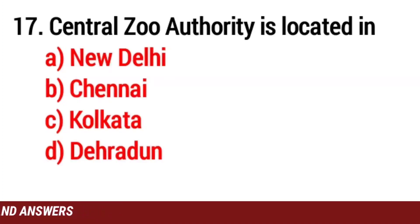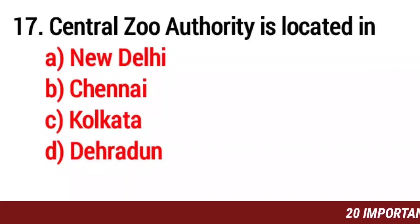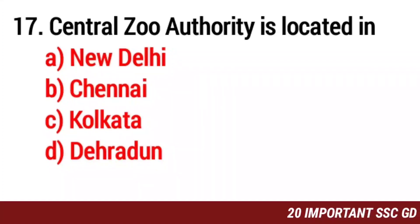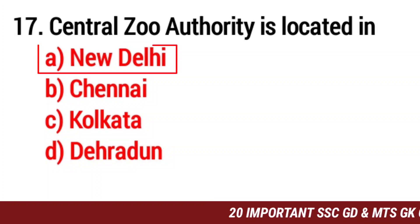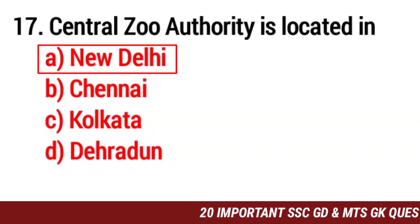Question number 17. Central Jute Authority is located in? The answer is option C. New Delhi.